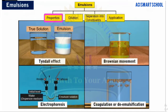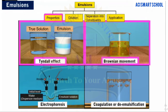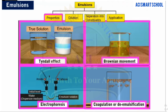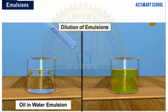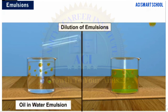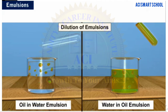Emulsions exhibit properties similar to colloids, like Brownian movement, electrophoresis, coagulation or demulsification on the addition of electrolytes, and so on. Emulsions can be diluted by adding the dispersion medium, that is, water for oil in water type emulsion, and oil for water in oil type of emulsion.